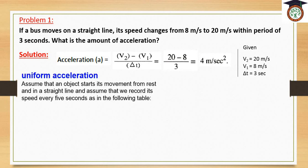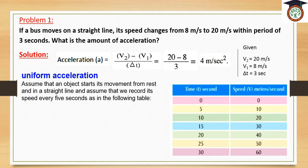Now we are going to talk about uniform acceleration. Assume that an object starts movement from rest in a straight line and we record each speed every 5 seconds. Time in seconds and speed in meters per second. The object starts motion from rest because the initial speed equals 0; after 5 seconds the speed becomes 10, after 10 seconds 20, after 15 seconds 30, after 20 seconds 40, after 25 seconds 50, and after 30 seconds 60 meters per second. The speed increases as the time passes.